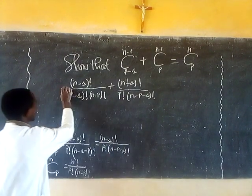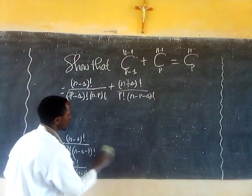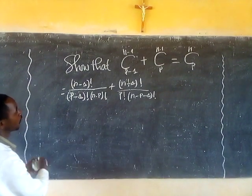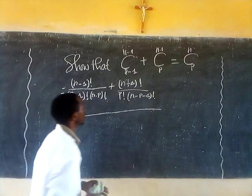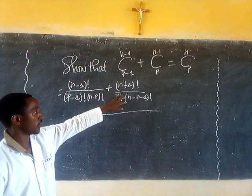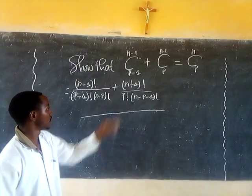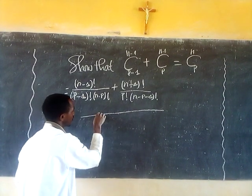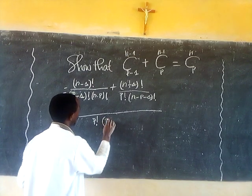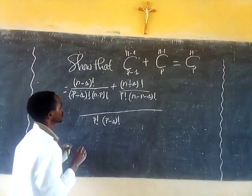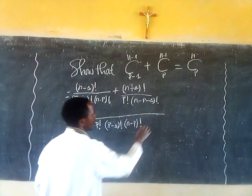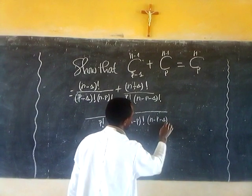So we need to explain how this equals C(N, P). We need to find the common factor or common denominator. Here P-1 factorial and P factorial share a relationship, so the common denominator involves P factorial and N-P factorial times N-P-1 factorial.